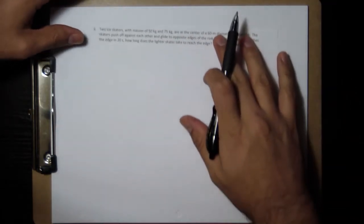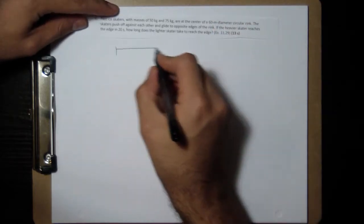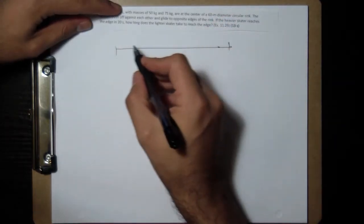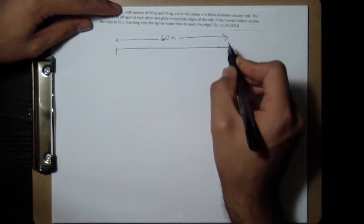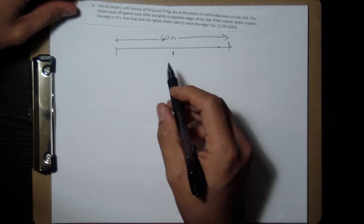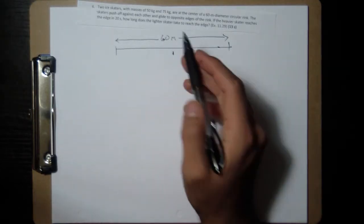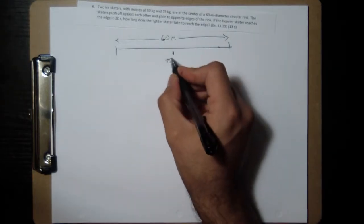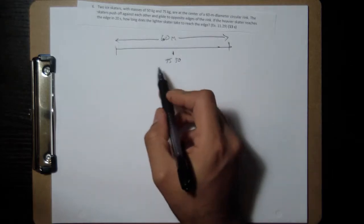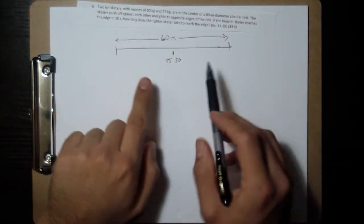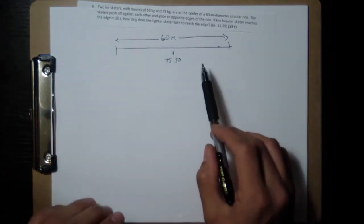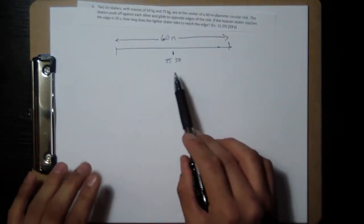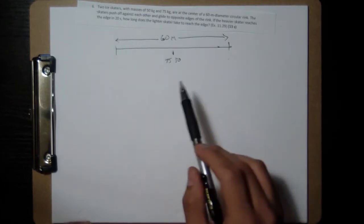So we have an ice rink with a diameter of 60 meters and they're both here in the middle. One of them weighs 50 and one of them weighs 75, the 75 over here, 50 over here. They're going to push off from each other and go to opposite sides of the rink. We want to figure out if we know how long it takes for this guy, how long is it going to take for this other guy or girl.